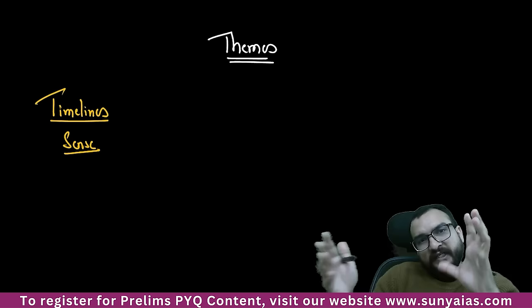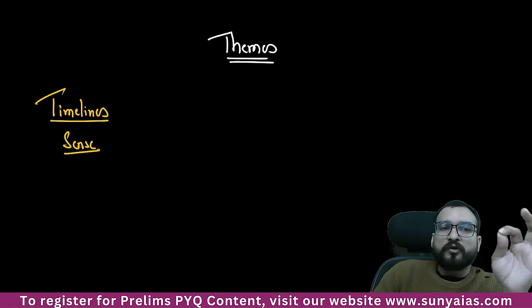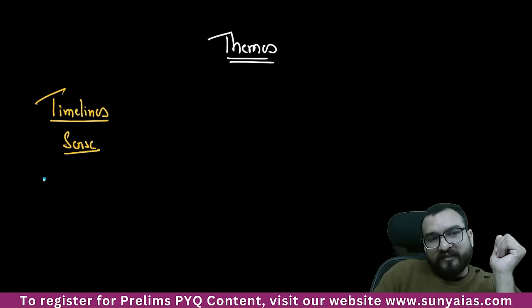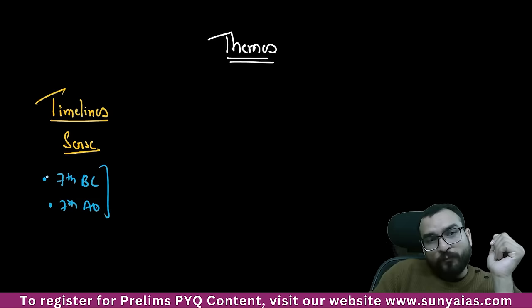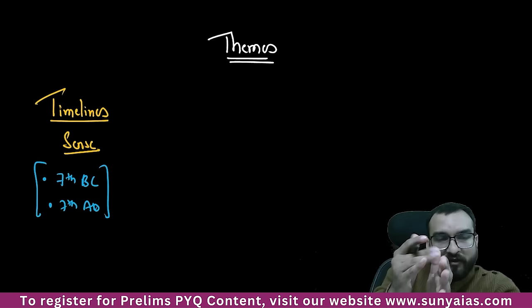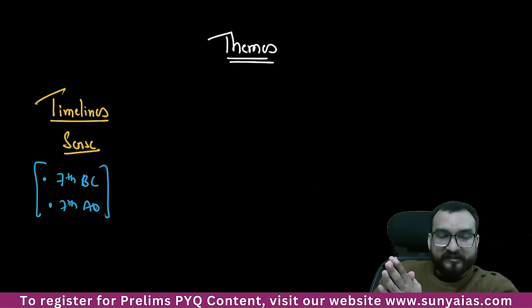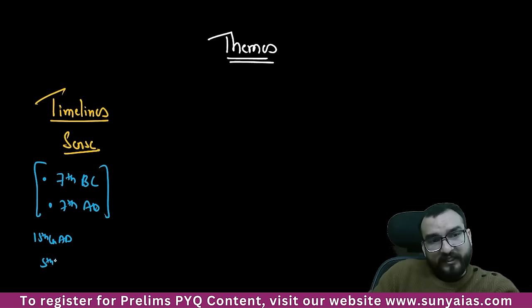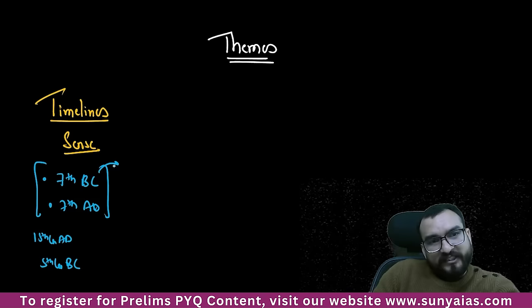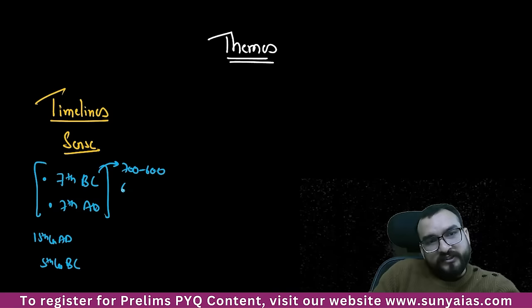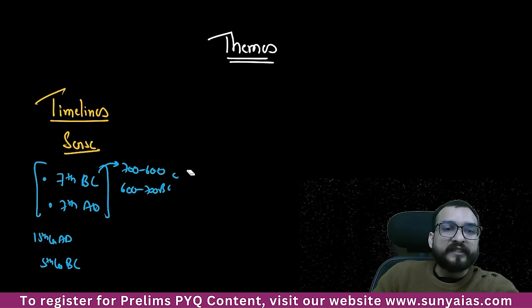Are you all connecting with me? Please comment. If you are connecting, we should go ahead patiently because this session we will understand the whole crux of ancient history. By analyzing the PYQs, you will see that UPSC wants us to have timeline sense. What do I mean by timeline sense? UPSC, while giving a question, mentions what was happening in the 7th century BC or 7th century AD. I have seen 90 to 99% of students are not comfortable with timelines. If I say what was happening in 15th century AD or 5th century AD or 5th century BC, can you tell me?